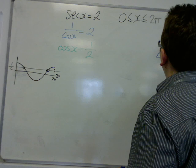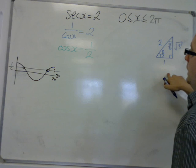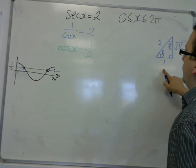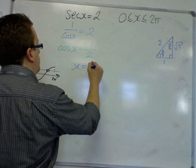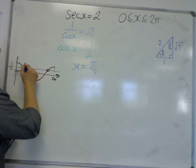If that is the adjacent and that's the hypotenuse, then x should be π over 3, and that will give us this solution here.